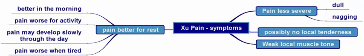The main symptoms of pain due to an underlying deficiency is the pain that is less severe and has a dull, nagging nature. There may also be no local tenderness on palpation. The underlying deficiencies may cause local weakness in muscle tone, as the muscles may lack nourishment.